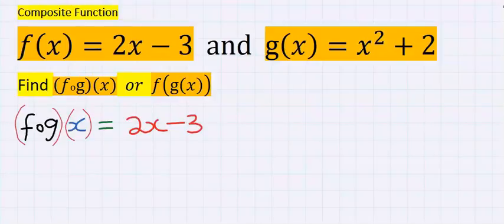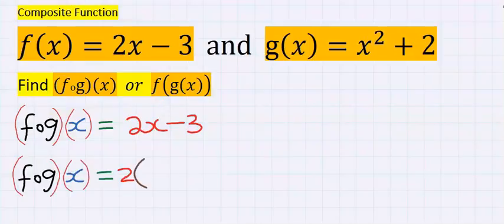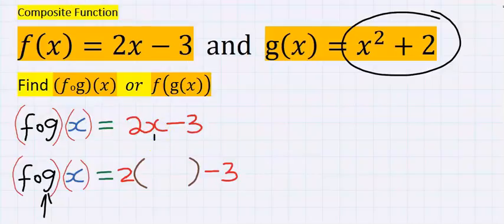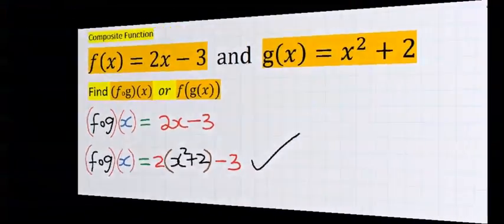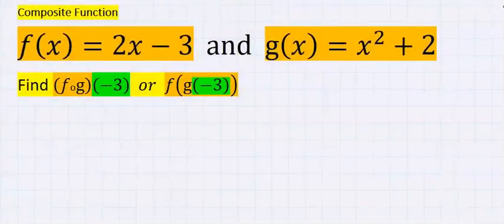To solve this problem, we are going to write f of x first because in the question f came first. Next, consider g of x, which is x squared plus 2, and replace it with x. Hence, instead of x, I'm going to have x squared plus 2. This is our answer.